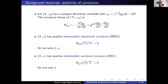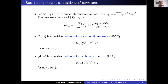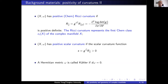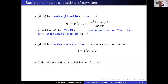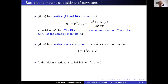Here we recall some basic ones. The first is the holomorphic bisectional curvature: you have two directions xi and eta, and this pairing is positive for non-zero eta and xi. If it's one direction, it's called positive holomorphic sectional curvature. We also have the Ricci curvature — since the metric is not necessarily Kähler, we write down the contraction as the Ricci curvature. Similarly, we have the scalar curvature as the trace of the Ricci curvature. A Hermitian metric being Kähler means its form is d-closed.